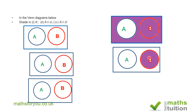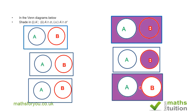For the third one, A prime intersection B prime: we don't want A and we don't want B either. So we end up shading the region outside both A and B within the universal set. I hope that all makes sense — please subscribe, and thank you for watching.